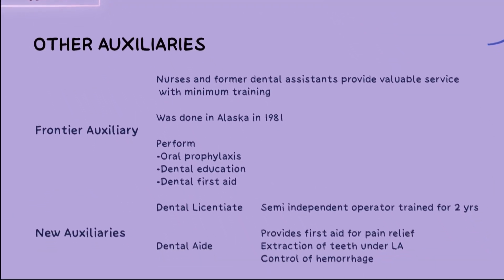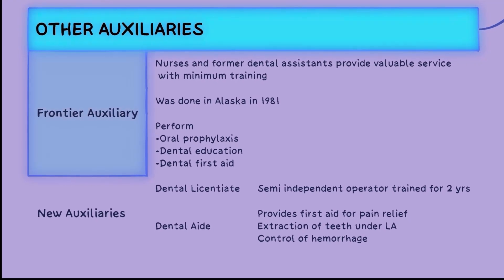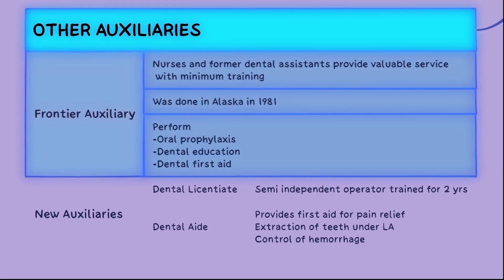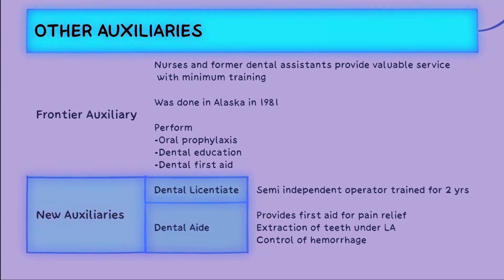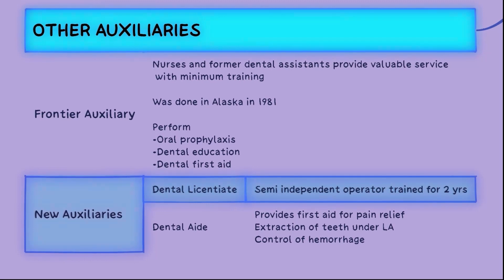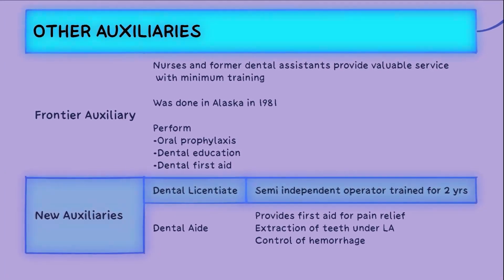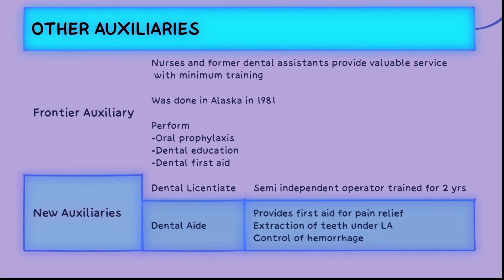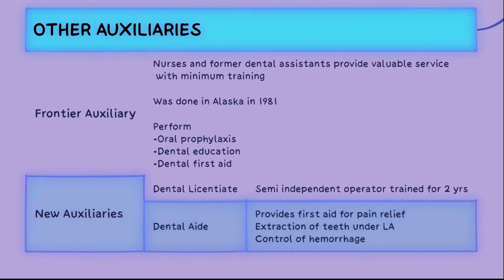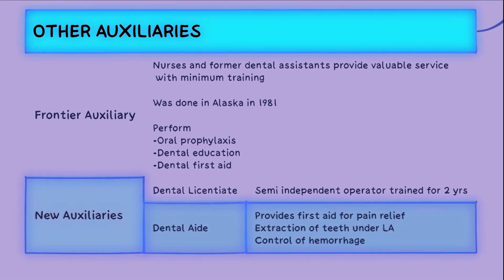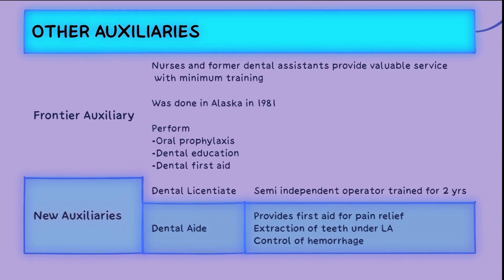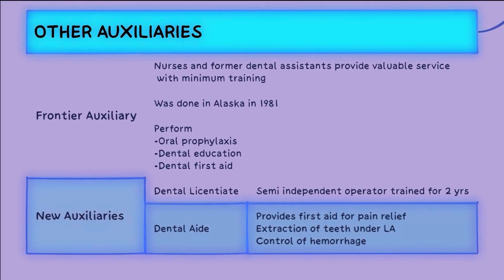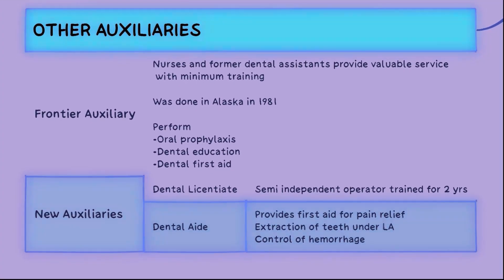Other types of dental auxiliaries include Frontier Auxiliaries, introduced in Alaska in 1981, who perform tasks such as oral prophylaxis, dental education, and dental first aid. The Dental Licentiate is a semi-independent operator who undergoes two years of training and possesses a degree of autonomy in performing dental procedures. Dental Aids primarily provide first aid for pain relief, extraction of teeth under local anaesthesia, and control of haemorrhage, playing a crucial role in managing dental emergencies and expanding accessibility of dental care to a wider population.